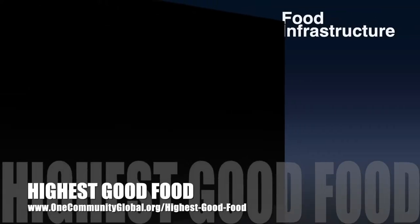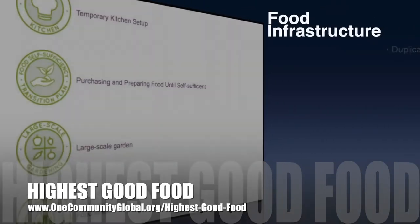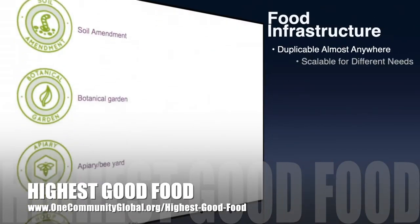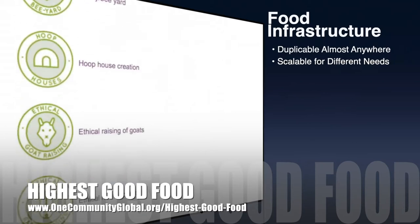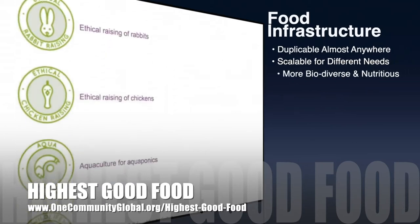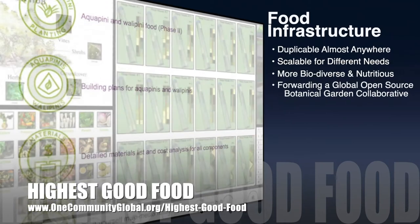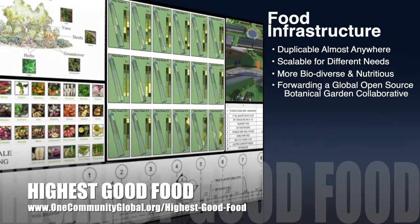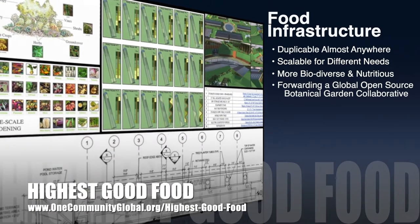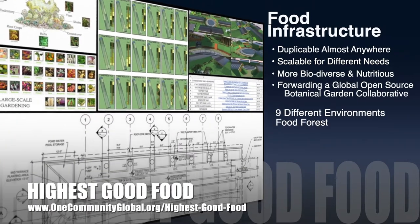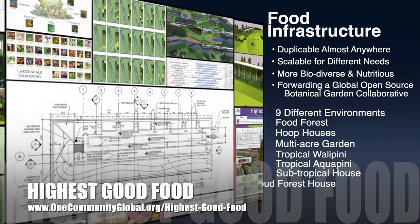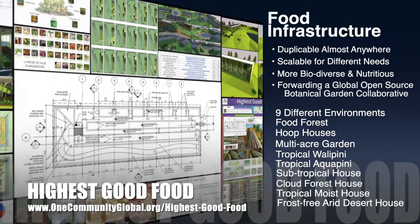One Community's approach to highest good food is duplicable almost anywhere, scalable for different needs, more biodiverse and nutritious, part of forwarding a global open-source botanical garden collaborative, and includes nine different free-shared and duplicable growing environments.